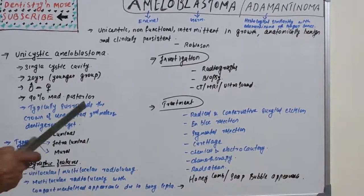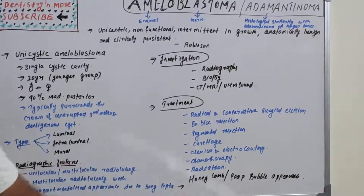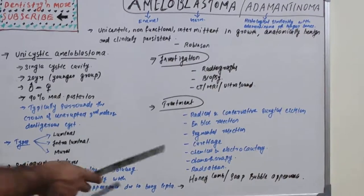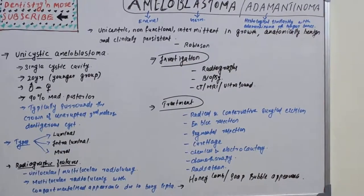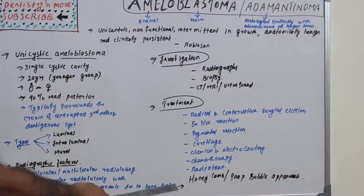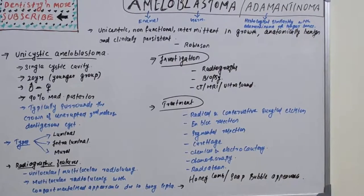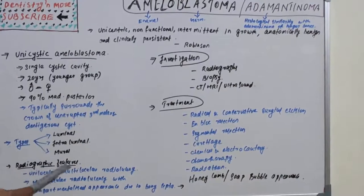Radiographic features: unilocular or multilocular radiolucency can be seen. The striking radiographic appearance is a honeycomb or soap bubble appearance — a multilocular radiolucency with compartmentalized appearance due to bony septa between compartments. This is the characteristic radiographic feature of ameloblastoma.